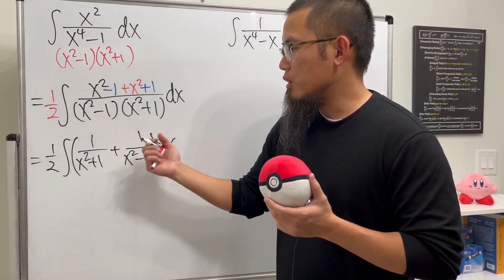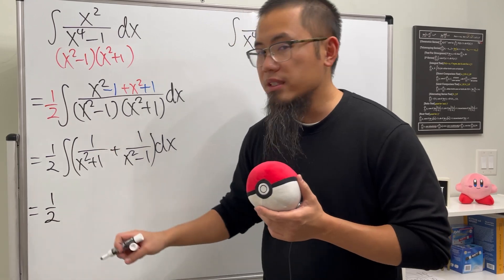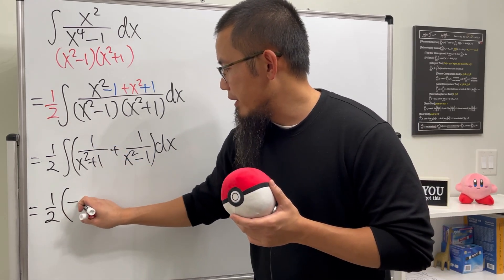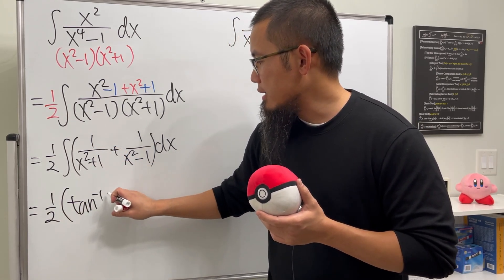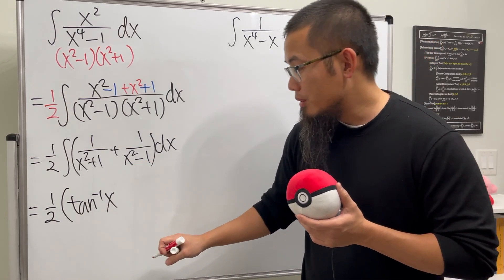And now, we can actually integrate each term, because for the first one, yes, we still have the 1/2 in the front. This is going to give us inverse tangent. No problem on that. This is x² - 1. Let me tell you this.